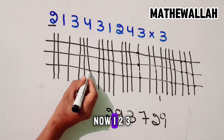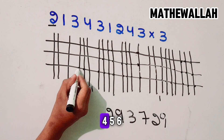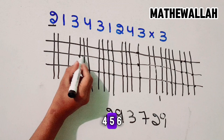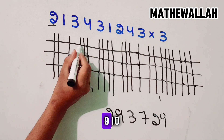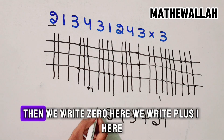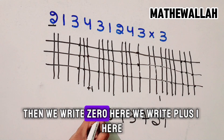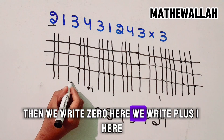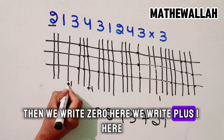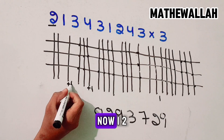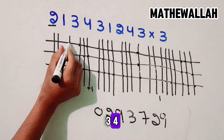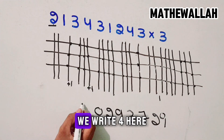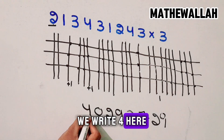Now 1, 2, 3, 4, 5, 6, 7, 8, 9, 10 — then we write 0 here and plus 1 here. Now 1, 2, 3, 4 — we write 4 here.